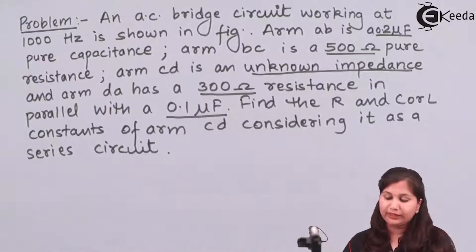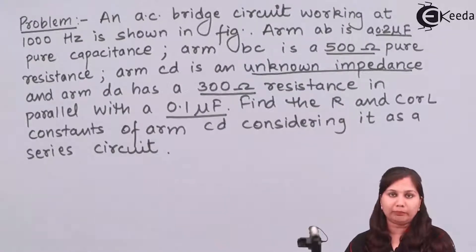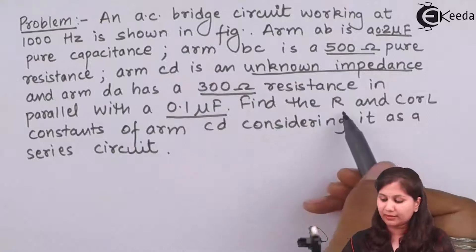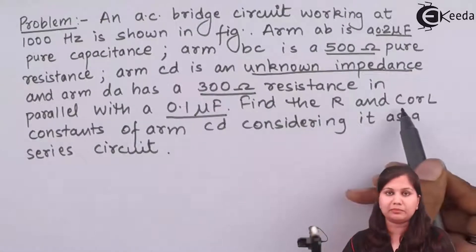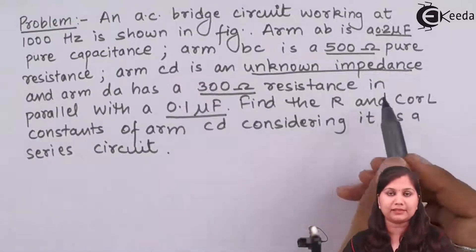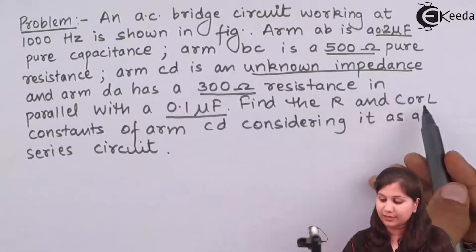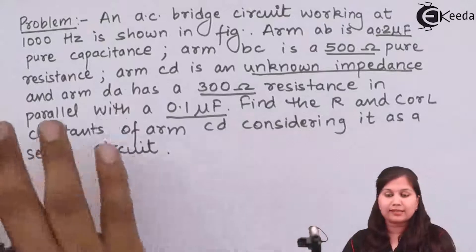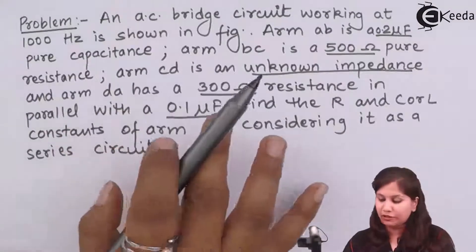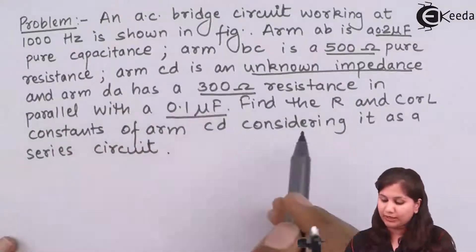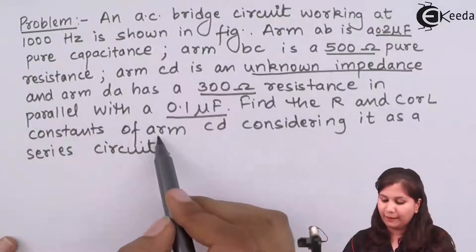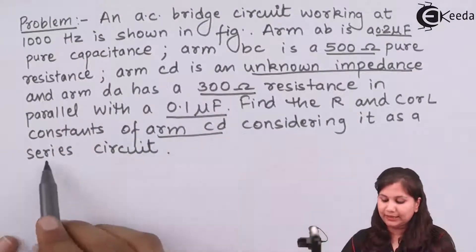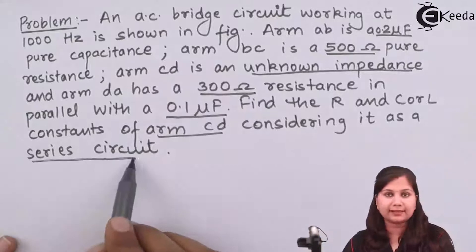We have to find out the value of the unknown impedance, which can be a resistance, a capacitance, or an inductance. We have to consider that arm CD is a series circuit.